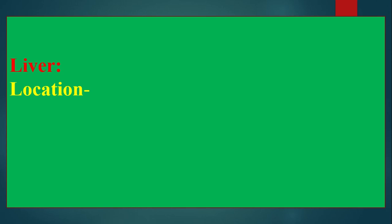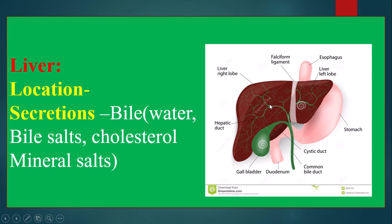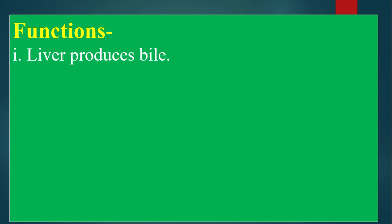The hepatic cells produce bile, which is alkaline in nature. Different types of biochemical reactions take place in the liver, so it is also called the organic laboratory of the animal body. Bile contains water, bile salts, cholesterol, and mineral salts. The liver secretes bile, which is stored in a sac called the gallbladder, and from there it enters the duodenum via the common bile duct.